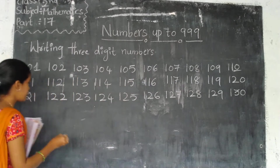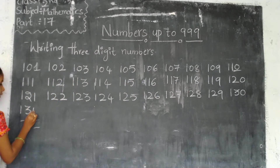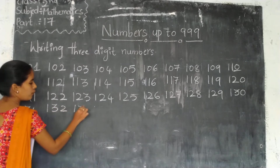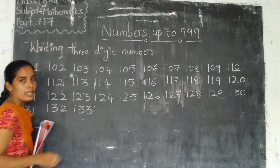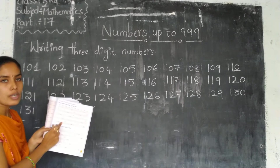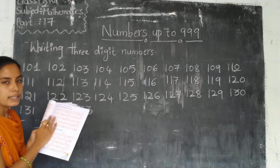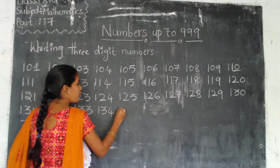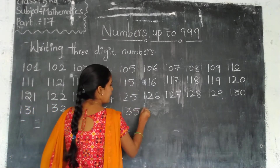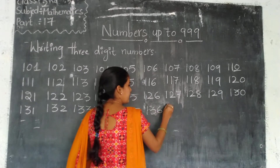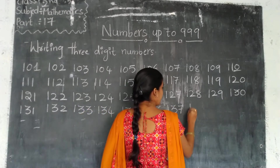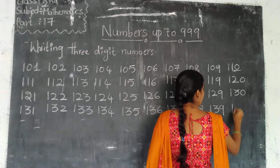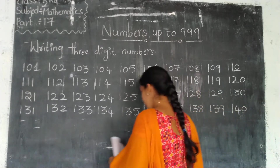Okay, and next. After 130, we continue: 131, 132, 133. Here they give a box in tabular form — you can write. 134, 135, 136, 137, 138, 139, and 140.